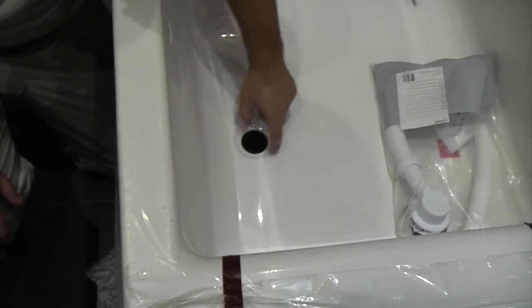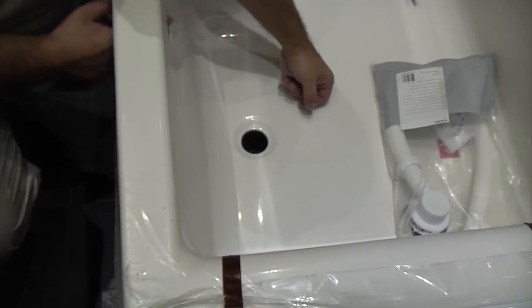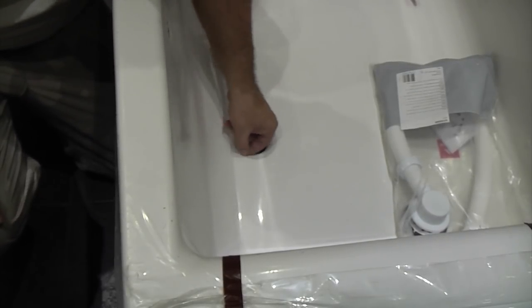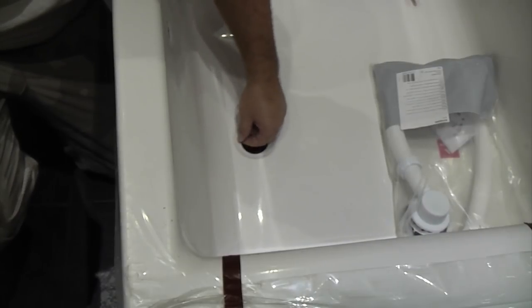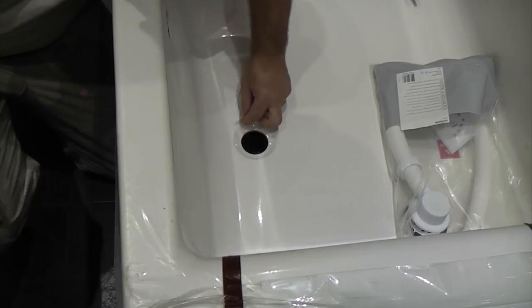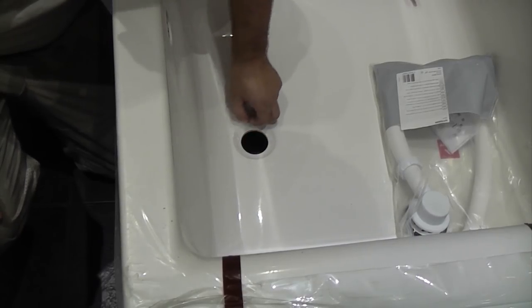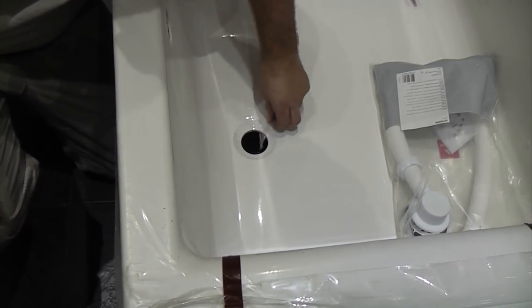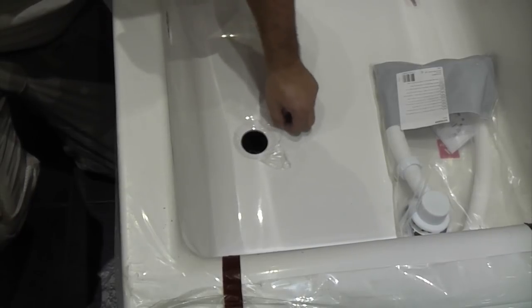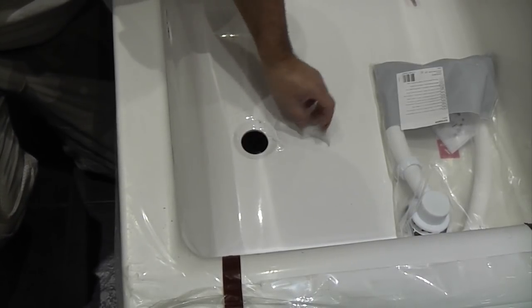We're now going to fit the waste and overflow to this bath. Before you do that, you need to remove the masking from the area because it's almost impossible to get it out afterwards. Just peel back an area—you don't need to remove all the masking, you can leave the rest on your bath.